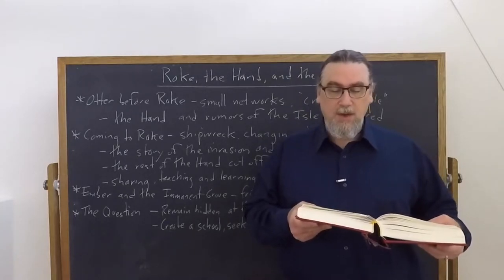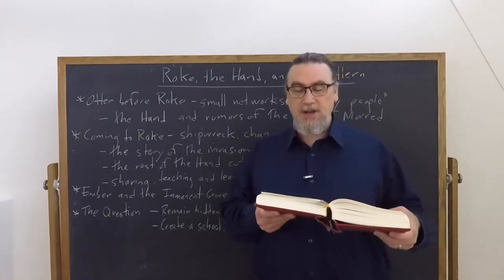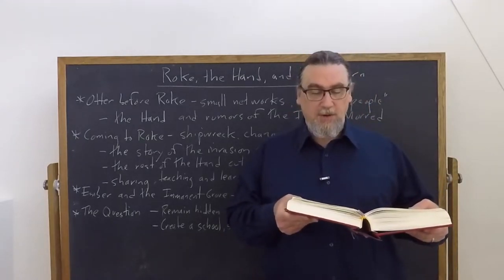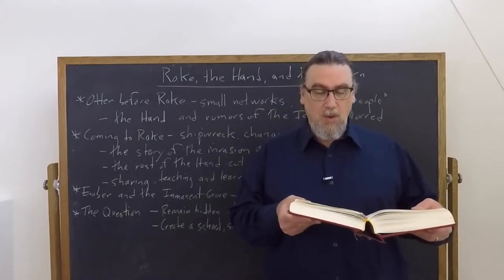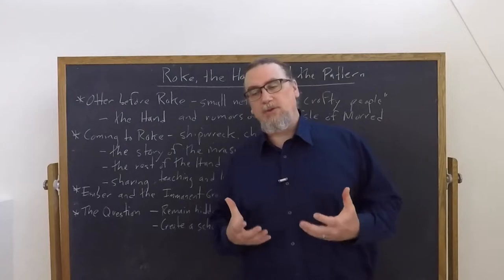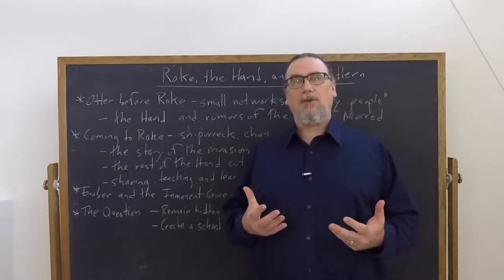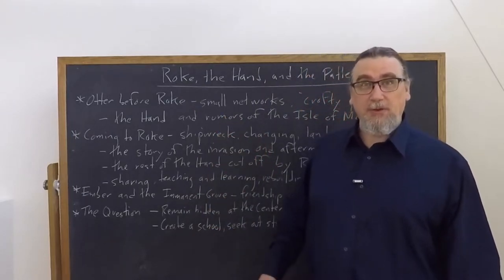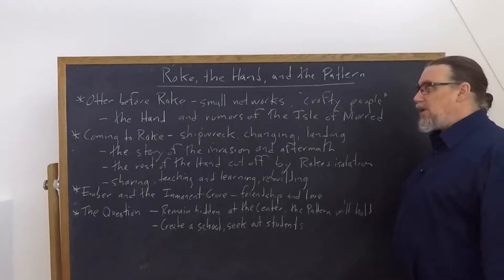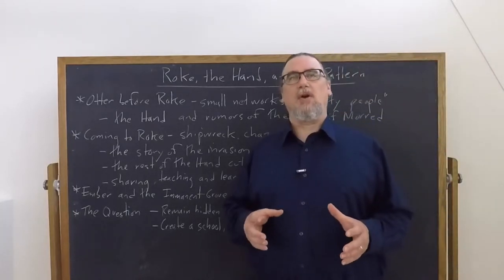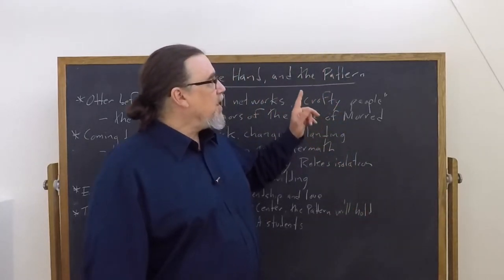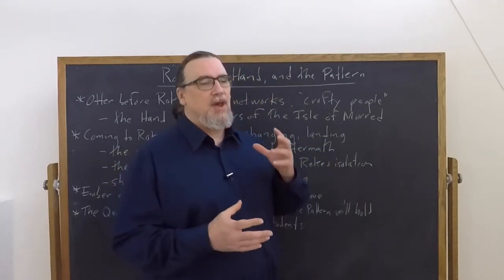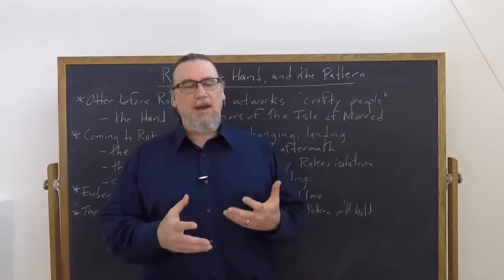And then later he runs into a man who's the changer and he teaches Otter some illusion. And then he teaches him the great spell of changing. And he's told that if he learns the changer's great spell, he would never use it but to save a life, his own or another's. So Otter is being introduced not just to the art of magic, but also to the need to keep it secret and also to the fact that it's not supposed to be used for any ends whatsoever, like the great wizards do: gain, rivalry, those sorts of things.